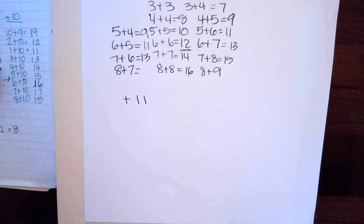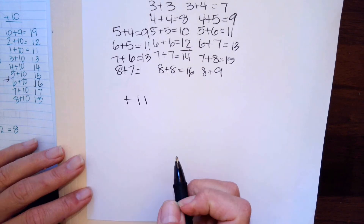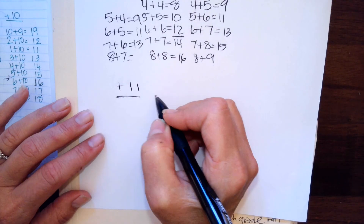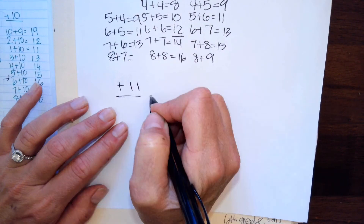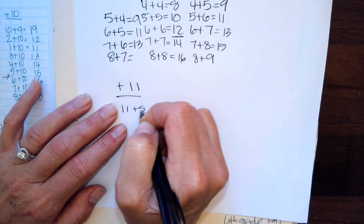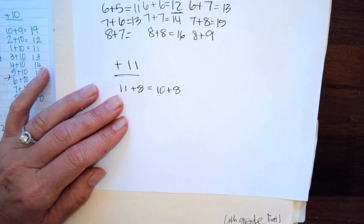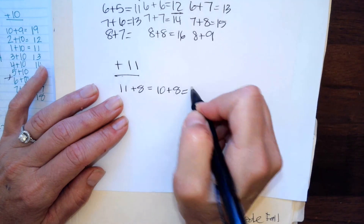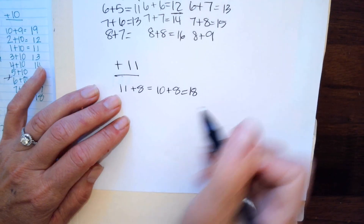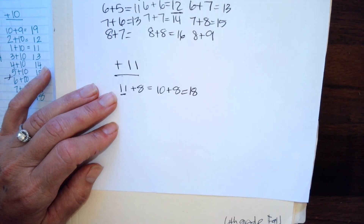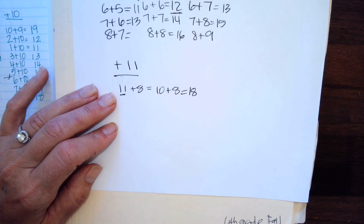Plus eleven — how would I figure out plus eleven? I already have something pretty easy that's close: plus ten. My plus ten strategy is to put a one in front of the number. So if I had eleven plus eight, I pretend it's ten plus eight, which is eighteen. But then I go up one, because I'm adding eleven, not ten. So what's plus one from eighteen? Nineteen.